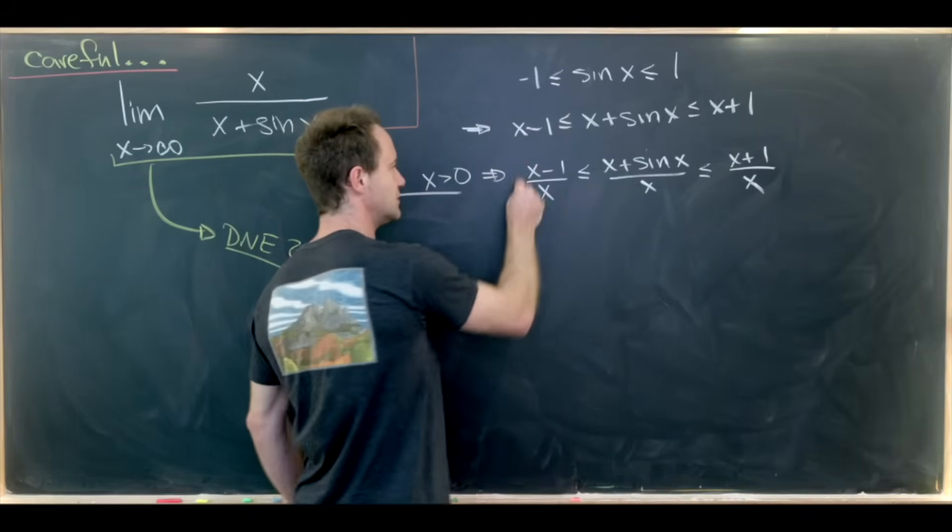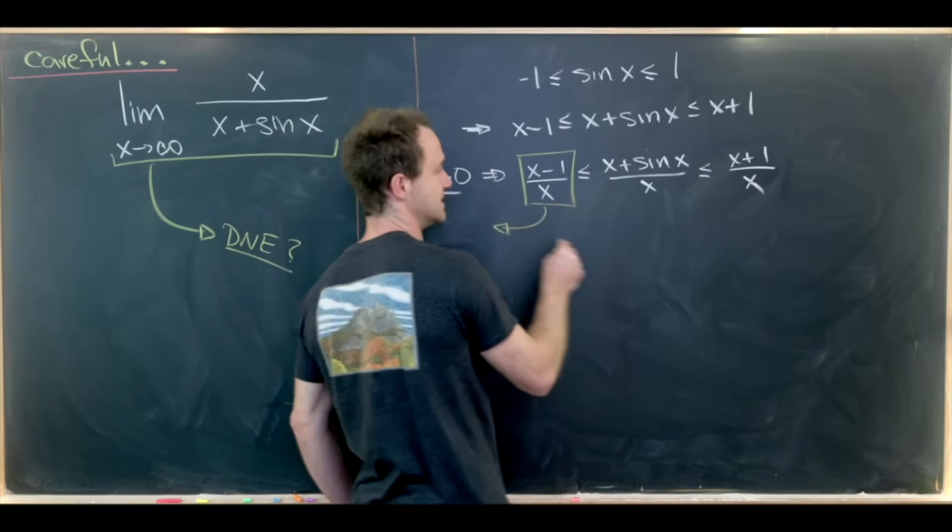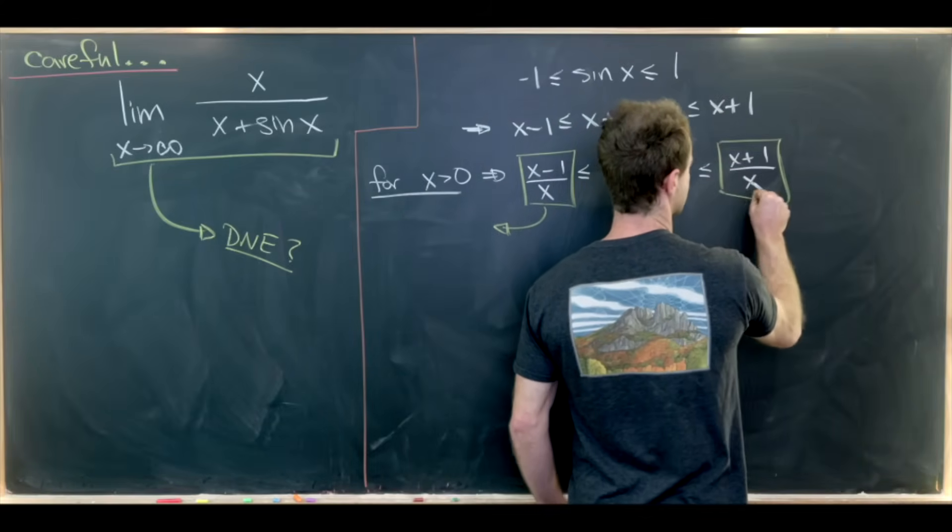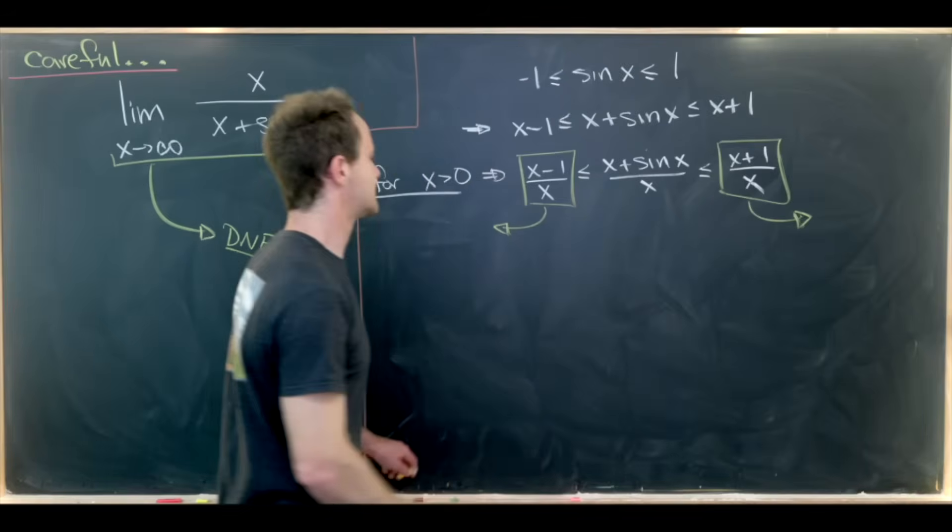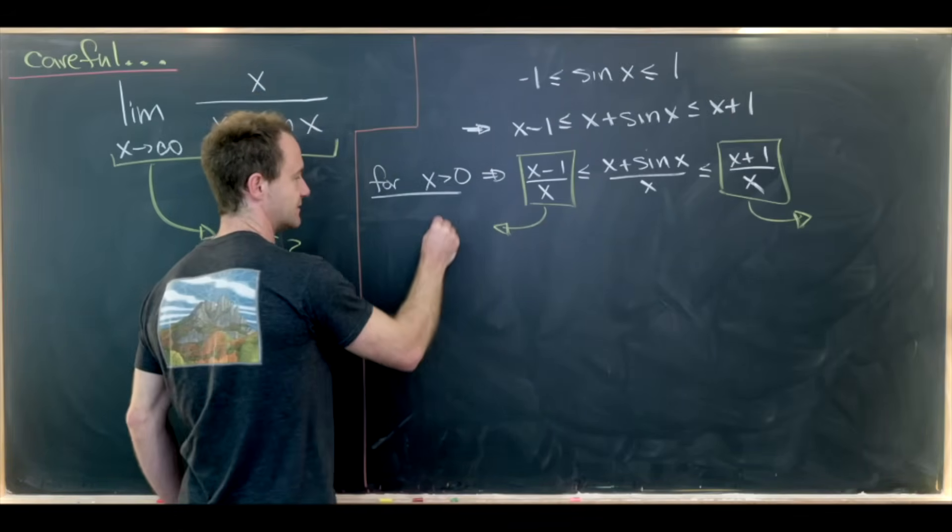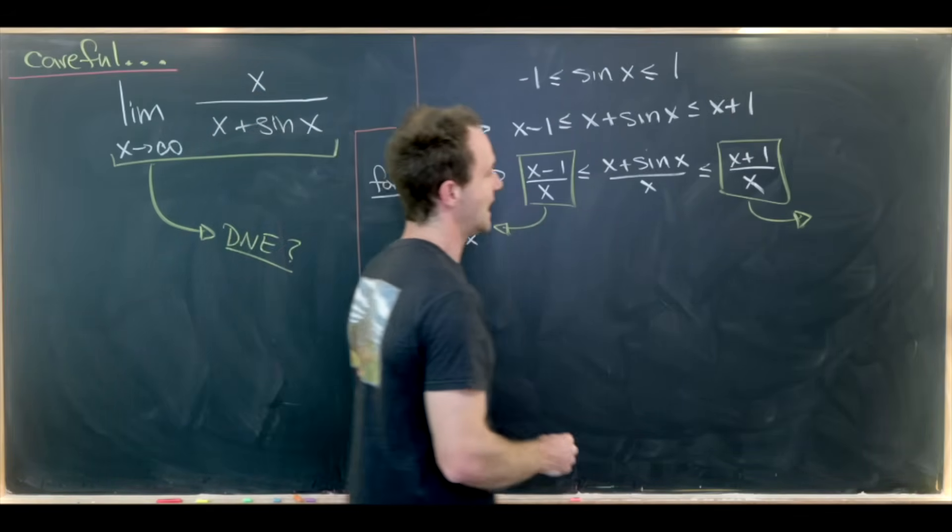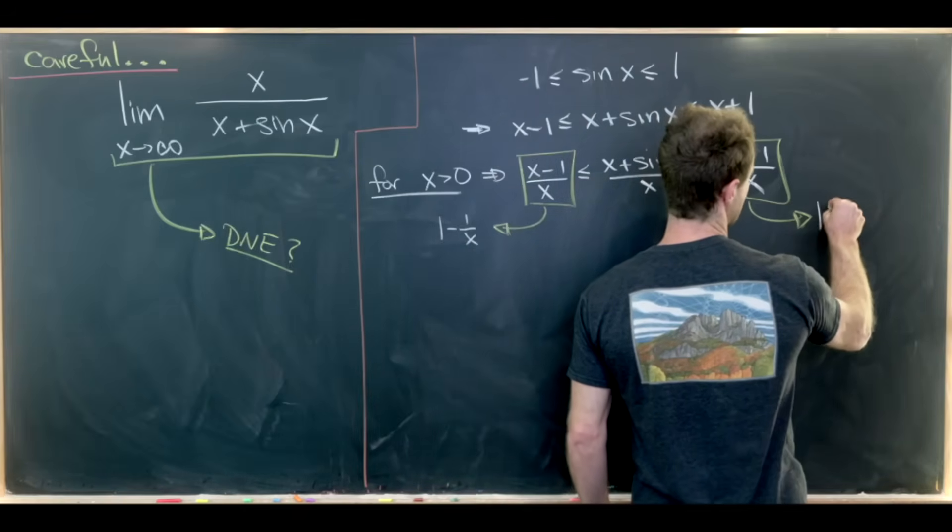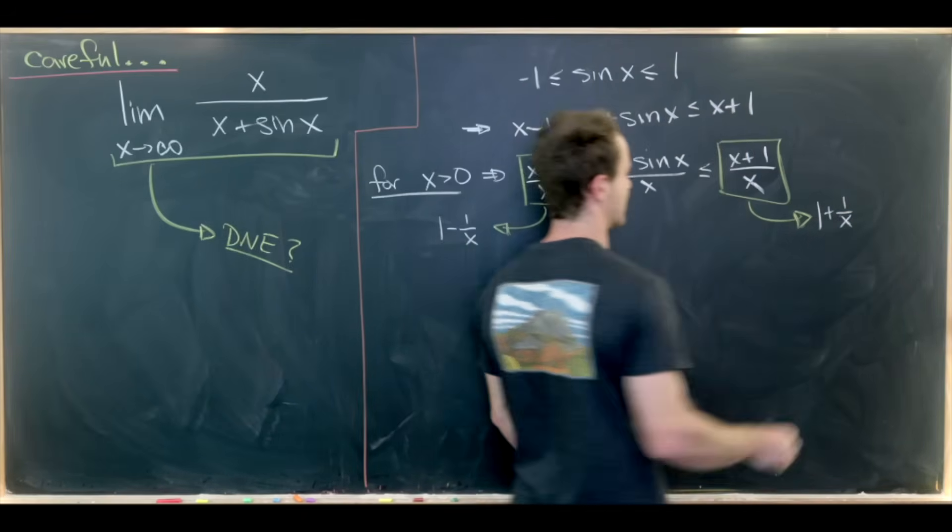But we can do a little bit of simplification on these upper and lower bounds. So let's do that. So this lower bound simplifies to 1 minus 1 over x and then this upper bound simplifies to 1 plus 1 over x.